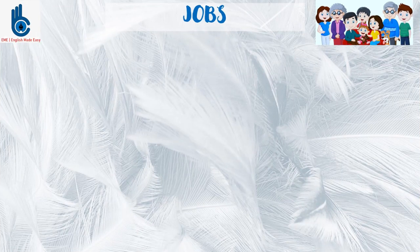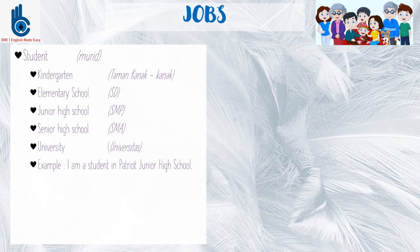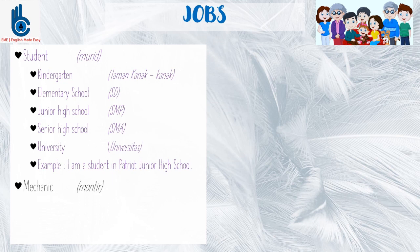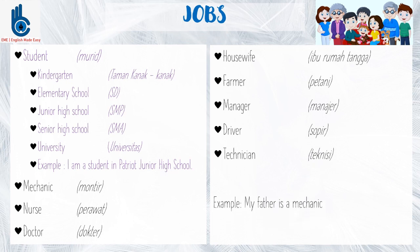Talking about the jobs of our family members, there are some kinds of jobs. For example, student — students can be students of kindergarten, elementary school, junior high school, senior high school, or university. For example, 'I am a student of Patriot Junior High School.' Other jobs include mechanic, nurse, doctor, housewife, farmer, manager, driver, and technician. For example, you can say, 'My father is a mechanic.'